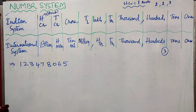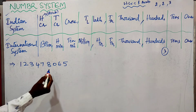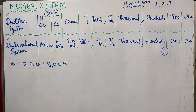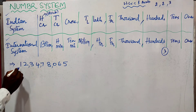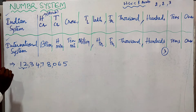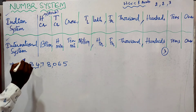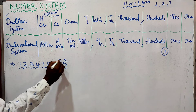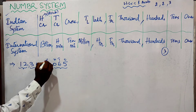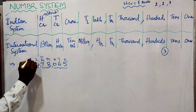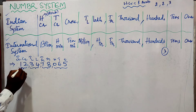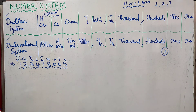First we will consider the Indian system. In the Indian system, we place the commas after 3 digits, then 2 digits, then 2 digits. The place values from right are: 1s, 10s, 100s, 1000s, 10 thousands, lakhs, 10 lakhs, crores, and 10 crores. So this number is read as 12 crores, 34 lakhs, 78,065.